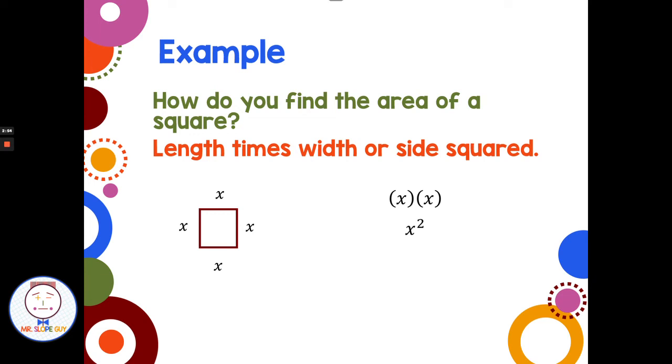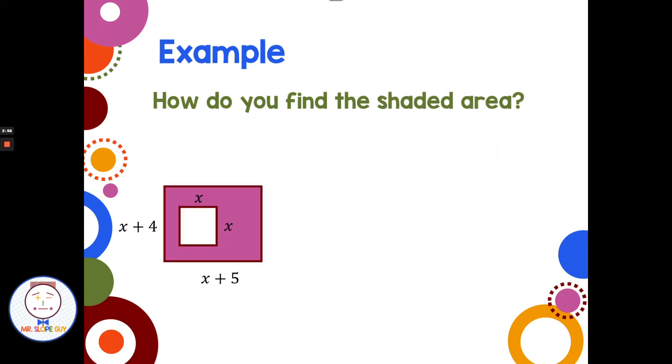Now, we can take these two problems and put them together for a harder problem. How would we find this shaded area? How would I find that pinkish area? I have a rectangle and I have a square.